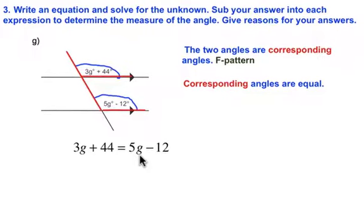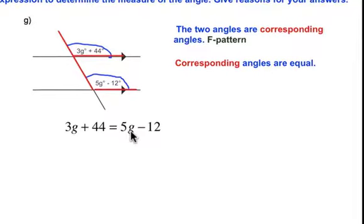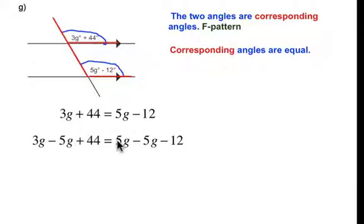What we have to do now is solve for g. The first thing we want to do is get rid of one of the terms with the variable from one side of the equation. We're going to do that by subtracting 5g from both sides and 5g minus 5g is zero. So we eliminate the g term from the right hand side of the equation. But remember we have to subtract 5g from the other side of the equation as well. 3g minus 5g is negative 2g. So the left side simplifies to be negative 2g plus 44, and 0 minus 12 is negative 12.